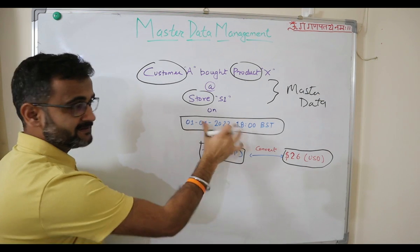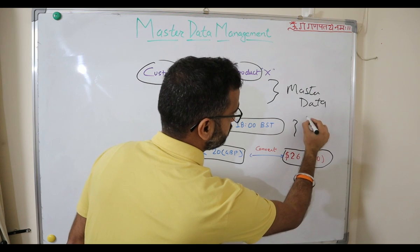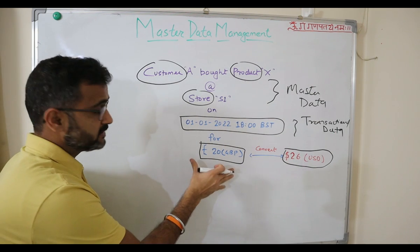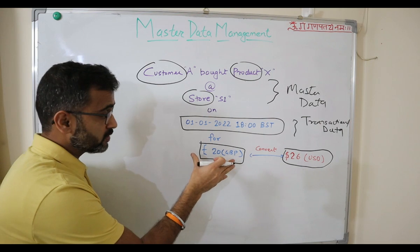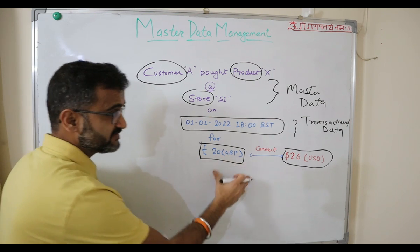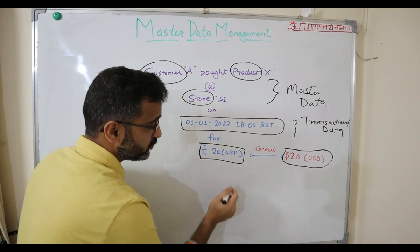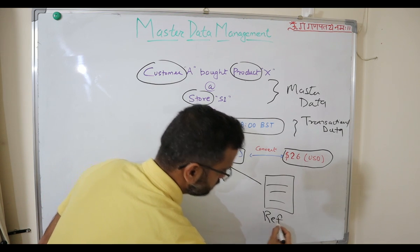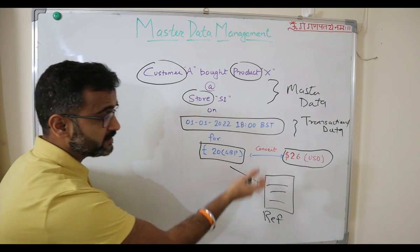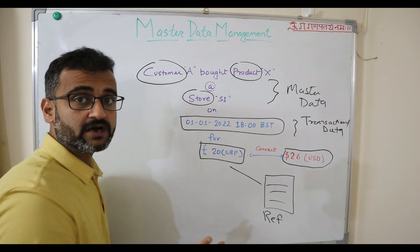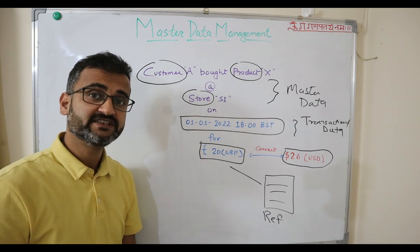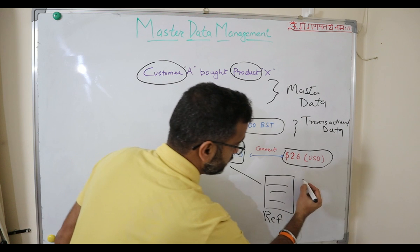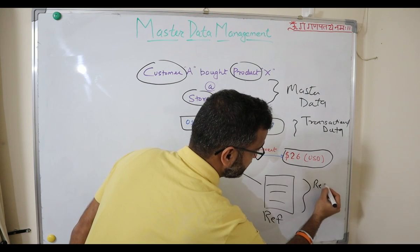What you see here is a very good example of your transactional data. Then the unit price, or the price of your product, is getting converted into US dollars. Suppose there is a reference table which is updated in real time with the latest conversion rates of USD and GBP. That particular reference table is an example of your reference data.